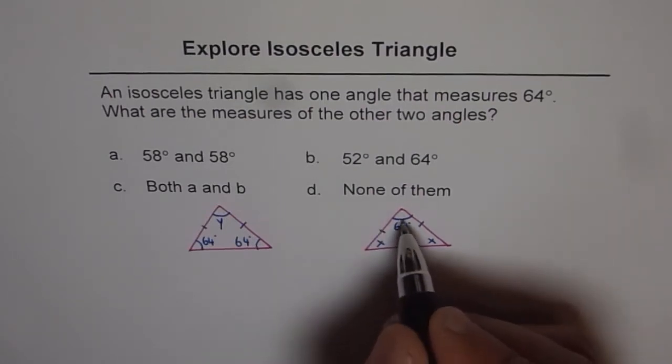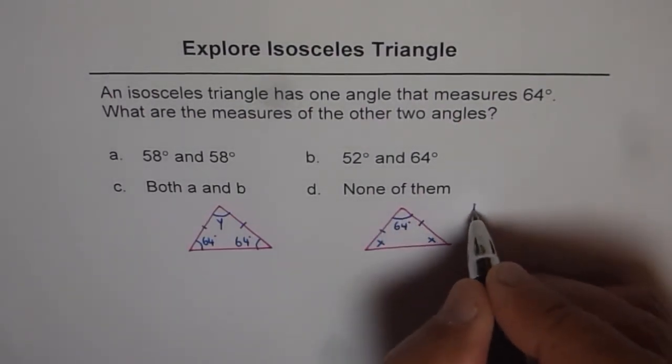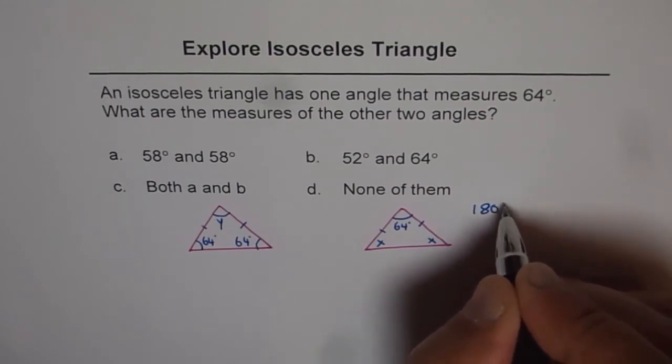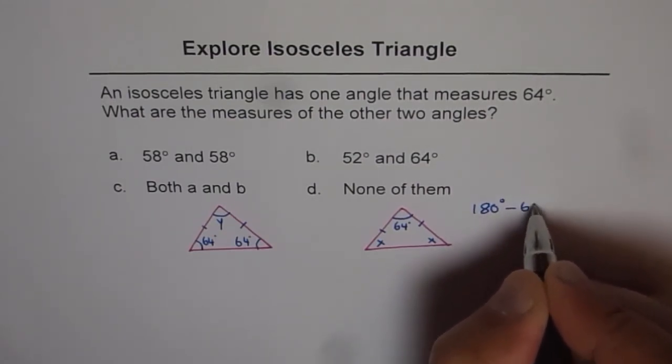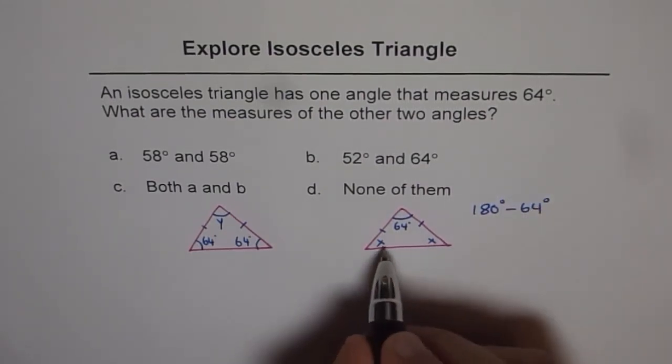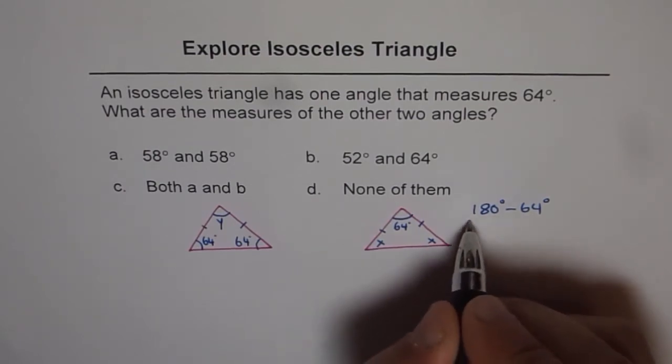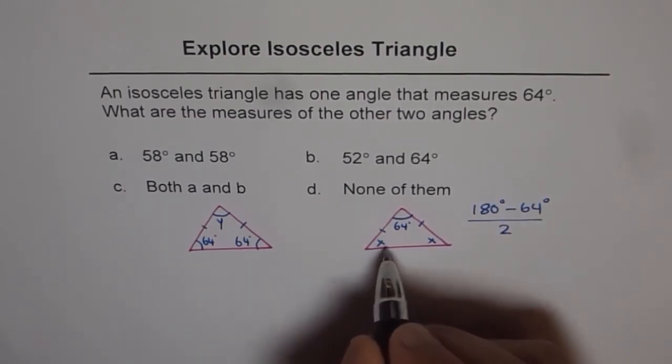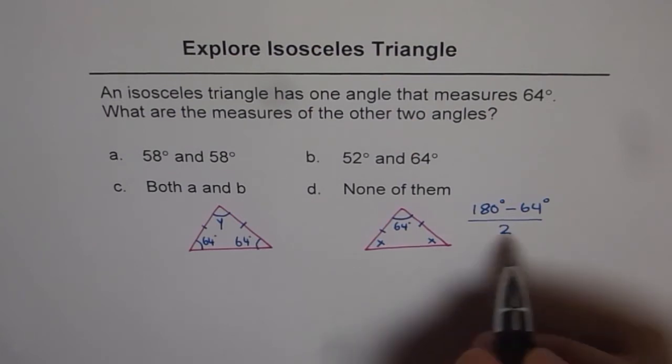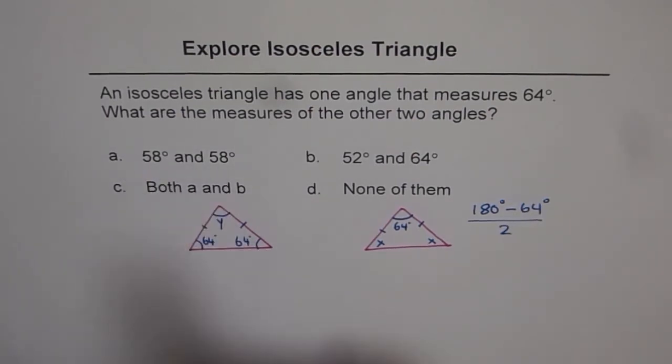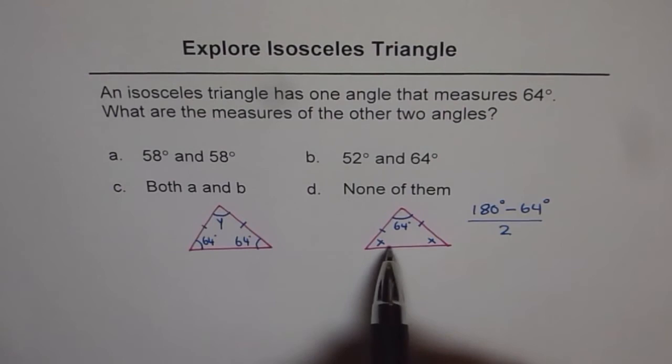Now if you adopt this approach where 64 is the vertex angle, then it is 180 degrees minus 64 will give you 2X. And dividing by 2 gives you the answer for X, which will be 58. So these two angles are 58.